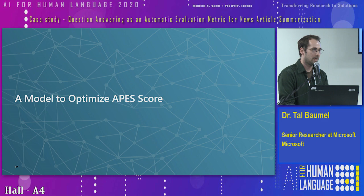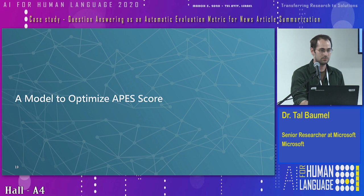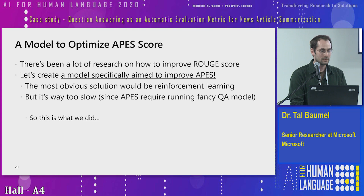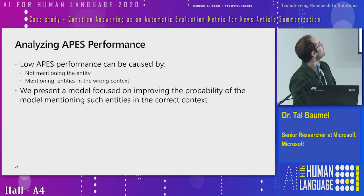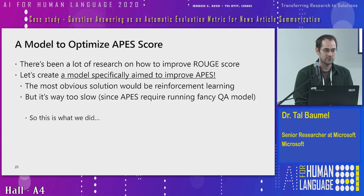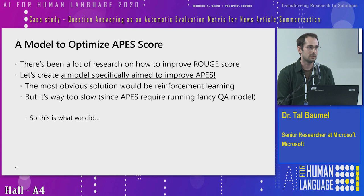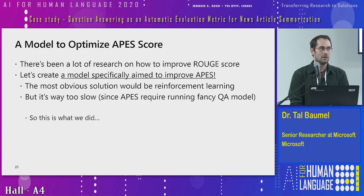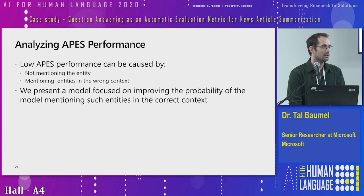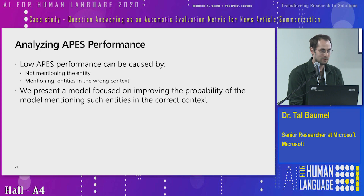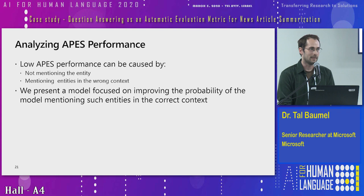We also created a model that optimizes the APES score. The most obvious approach was reinforcement learning, but anyone with experience with RL over sequence-to-sequence models knows it's very slow — we just didn't get any results. So we instead did an analysis of what kinds of summaries get low APES scores. We found two main problems: first, not mentioning the entity needed for the answer means you won't get a good APES score.